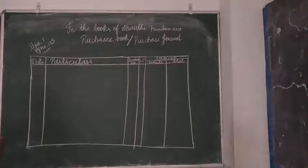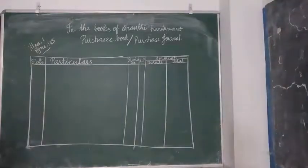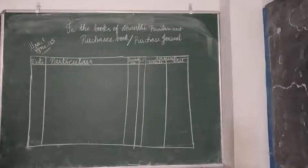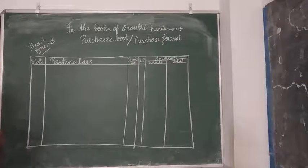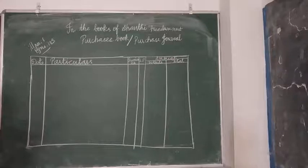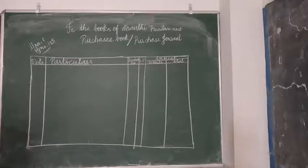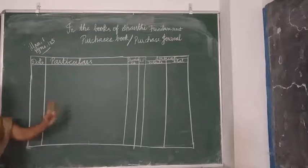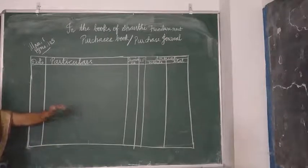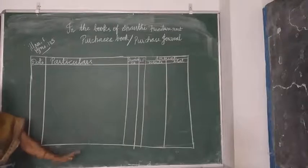March 6th: purchased for cash from Welcome Furniture. We can see the word 'cash' is there, so that entry we should not take into account. That March 6th transaction we should not include because it is a cash transaction. We should not take it into the purchases book — because the purchases book is maintained only for credit purchases.